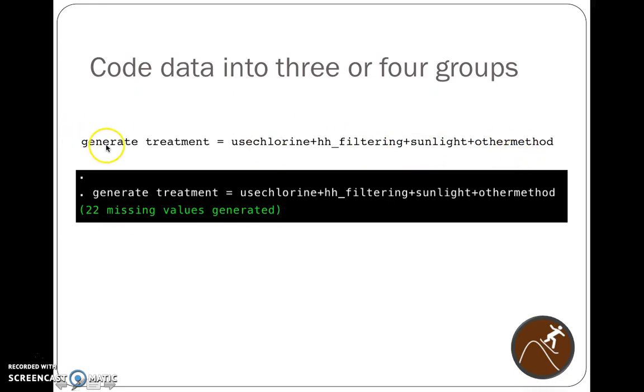So if they answered yes to all of these things in the survey, they would count as four. If they answered yes to just chlorine and filtering, they would have had two. If they answered yes for chlorine and sunlight, but zero for filtering and other method, they would still have two. So we created this variable called treatment that has zeros, ones, twos, threes, and fours, all possible. When we did this command, 22 values were generated in Stata, so something was missing for 22 of the 800-some-odd people in the study.